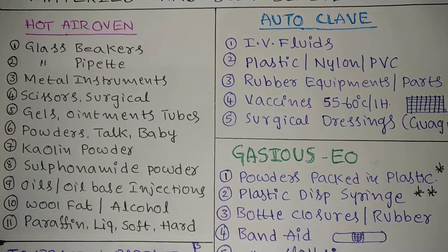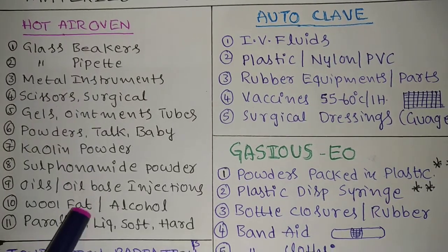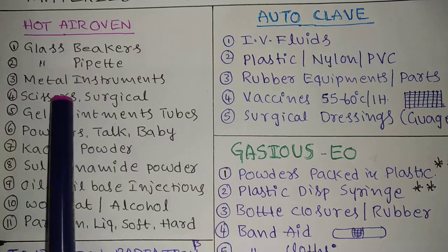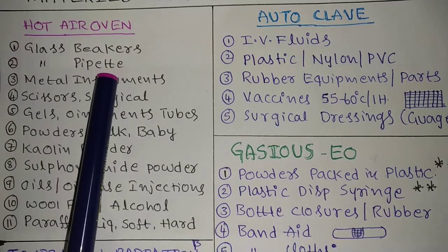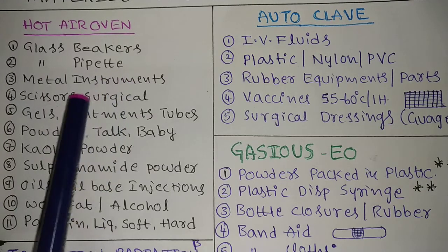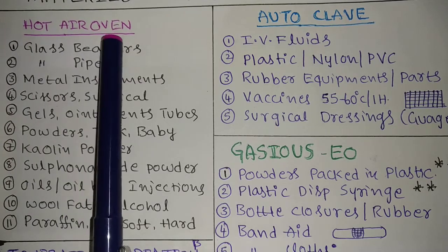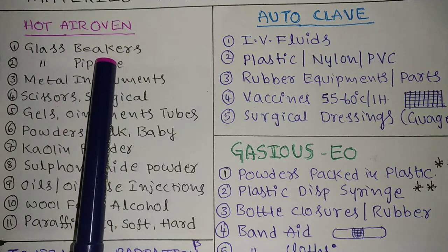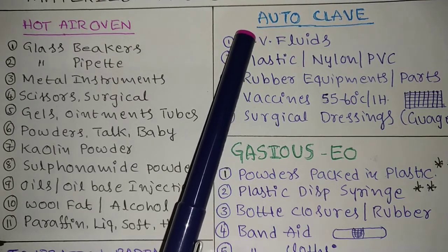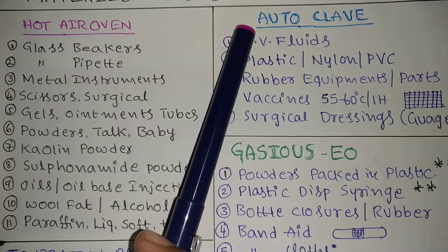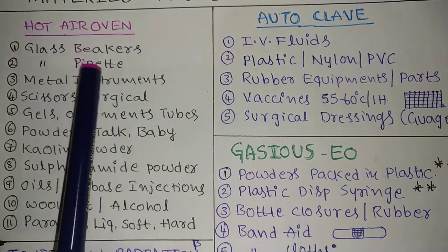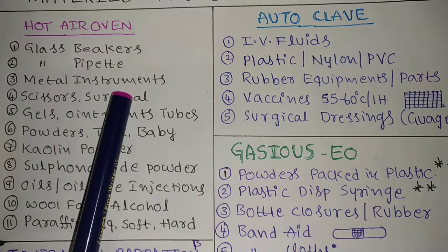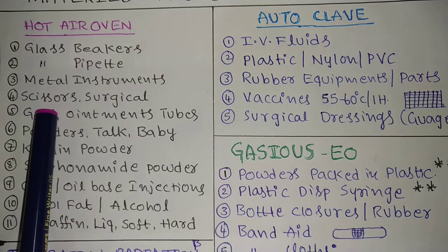First, we will see the hot air oven. Glass beakers, glass pipettes, and any glass equipment used in the regular laboratory are sterilized by using the hot air oven. Keep in mind that glass items will break down in the presence of pressure. In the autoclave, pressure is created by moisture, which causes glass items to break — that's why we don't use autoclave for glass.